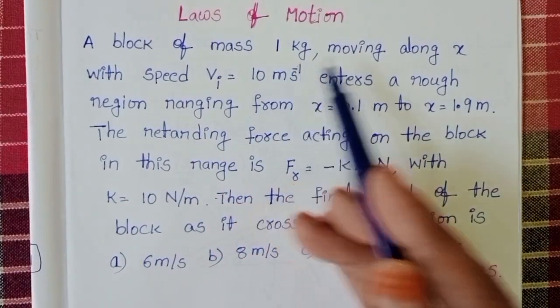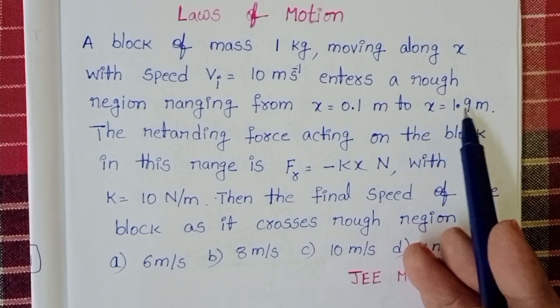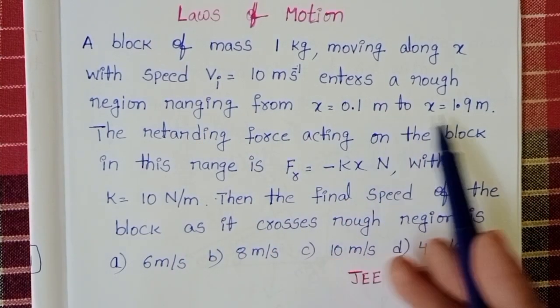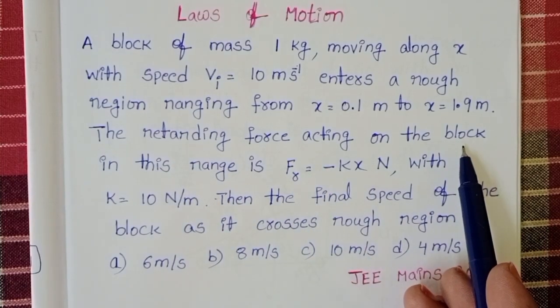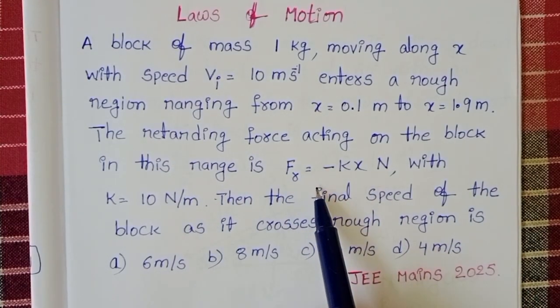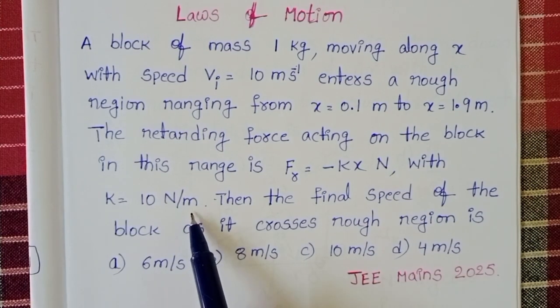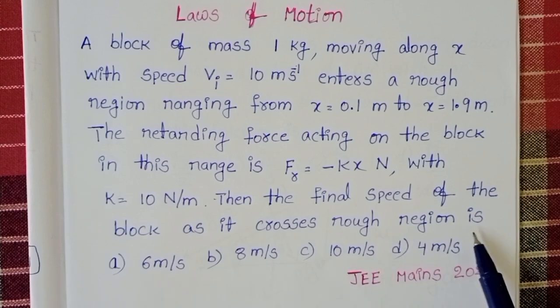A block of mass 1 kg moving along x with speed 10 meters per second enters a rough region ranging from 0.1 meter to 1.9 meters. The retarding force acting on the block in this range is Fr equals minus kx newton, k equals 10 newton per meter. Then the final speed of the block as it crosses rough region is?